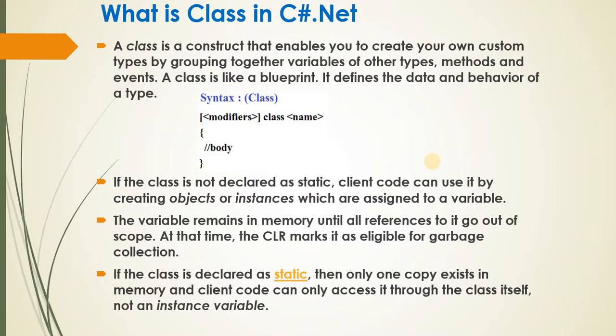So what is a class in C-Sharp? A class is a construct that enables you to create your own custom type while grouping together variables of other types, methods, and events. A class is like a blueprint — it defines the data and behavior of a type. It does not occupy any memory space on its own.